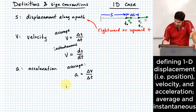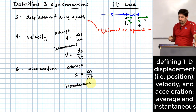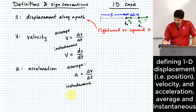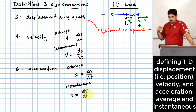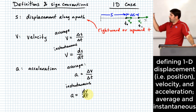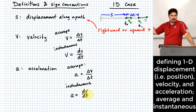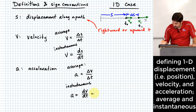To go to an instantaneous acceleration, a just becomes dv/dt — the derivative of velocity with respect to time. Since v is a derivative of position with respect to time, it's fair to say acceleration is the second derivative, which you can write as d²s/dt².